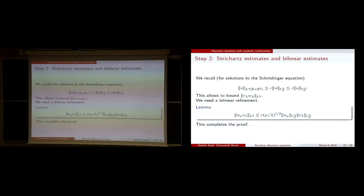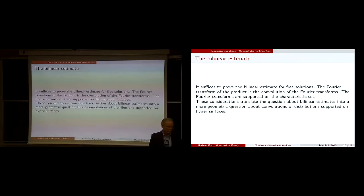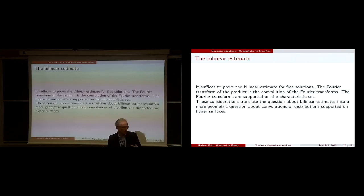To conclude, I want to say a bit about the bilinear estimate without giving details. What we do is estimate a product in L^2. With the U^p spaces we can reduce things to free waves. We have two solutions to our equation, and what you look at is the convolution of two functions with Fourier transforms supported on the characteristic surface.